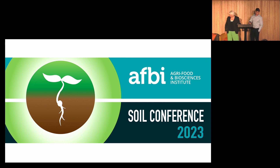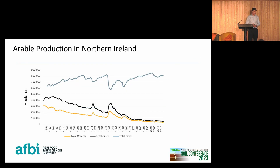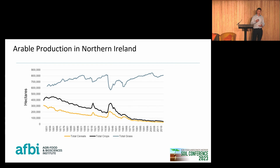Good afternoon — my talk today is on soil health and arable, focusing on some of the biological aspects. Just to give an overview of arable in Northern Ireland: in the 1950s there were over 400,000 hectares of total crops, however today this is around 46,000 hectares.